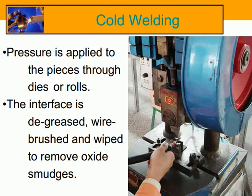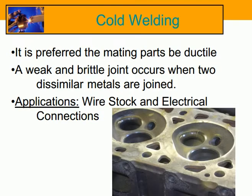Cold welding prefers that the mating parts be ductile. A weak and brittle joint occurs when two dissimilar metals are joined. Applications include wire stops and electrical connections.